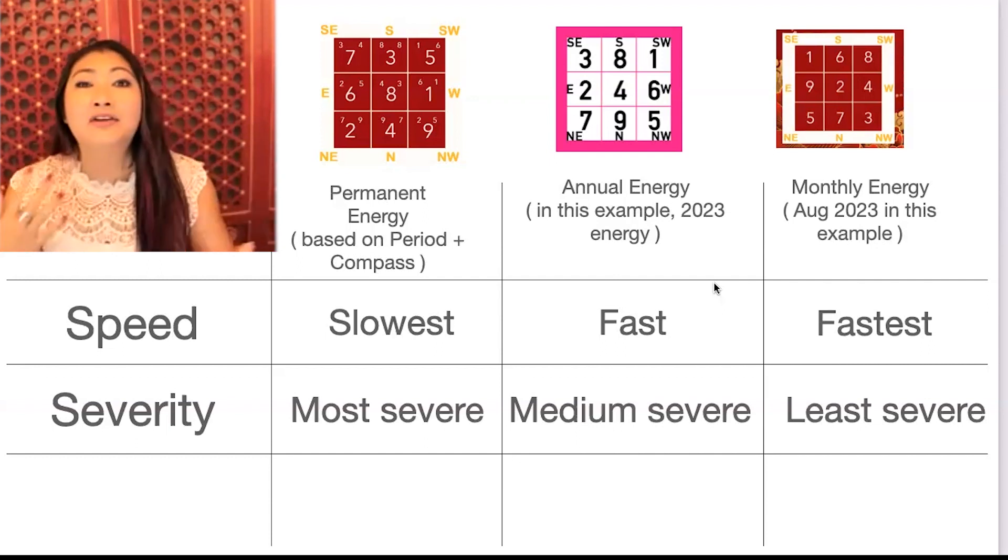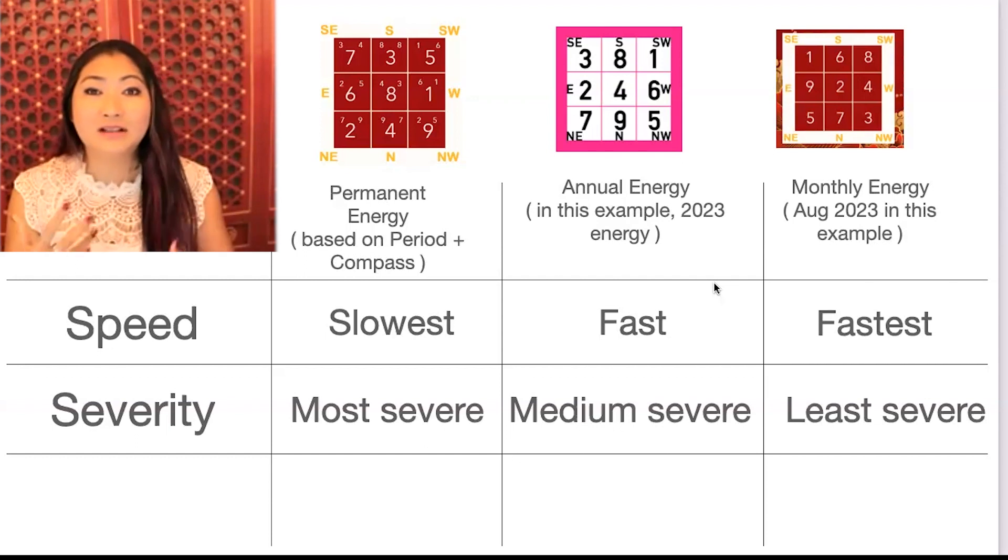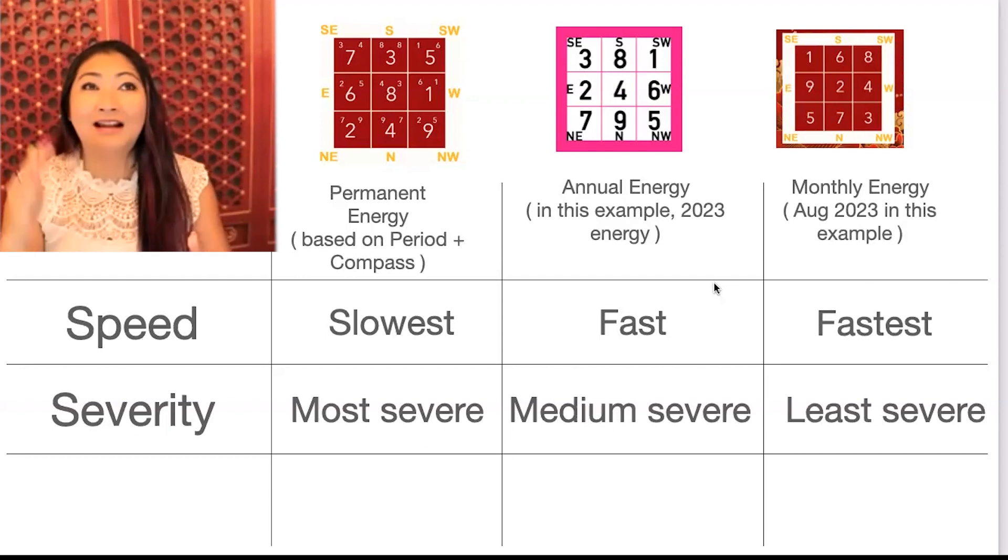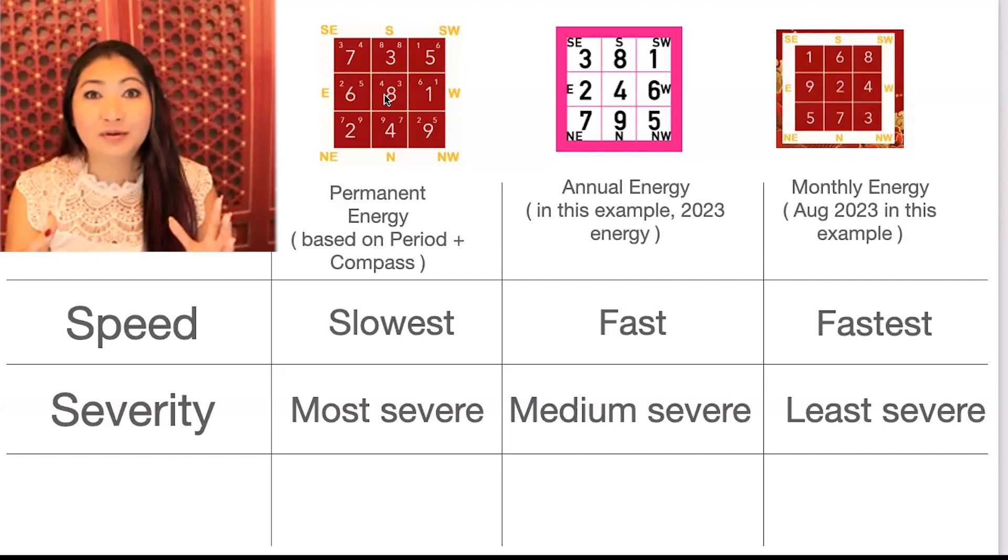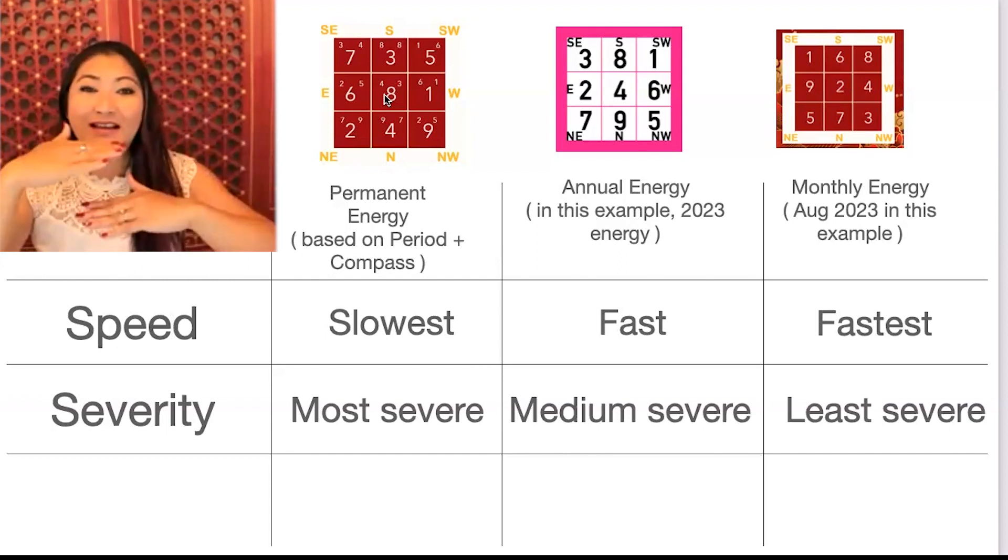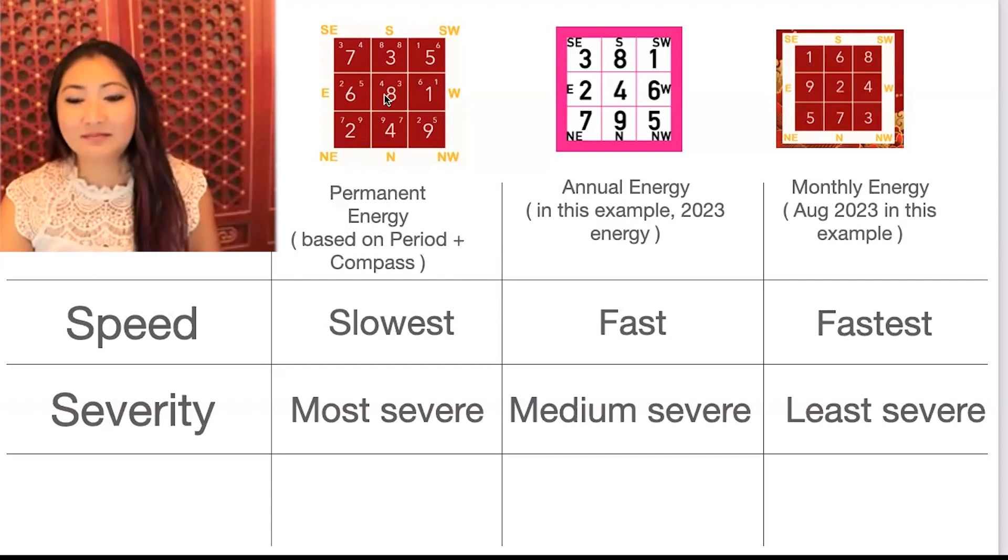Now, the severity is something that you can still bounce back from. It might take a few extra months, but you can still bounce back from that. I also have clients where they got COVID and we could trace it back. Again, the annual energy plus the permanent energy in their bedroom leads to ill health. And they're like, oh, we managed to get away from COVID for like three years until now. Like what gives, right? It's the annual energy combined with their permanent energy that triggers more ill health.